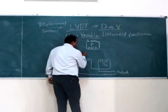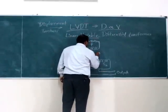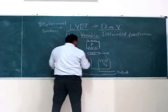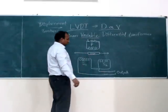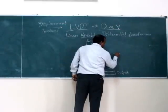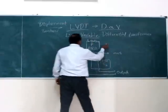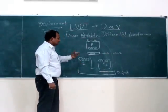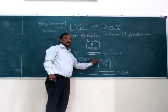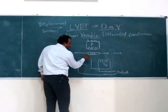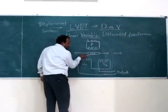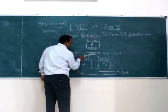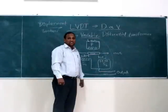The iron core is present inside and can move to the right side or left side. Depending on the movement of this iron core, the magnetic flux is generated. Depending on the distance of the core from each secondary winding, the corresponding AC voltage is generated at the output.